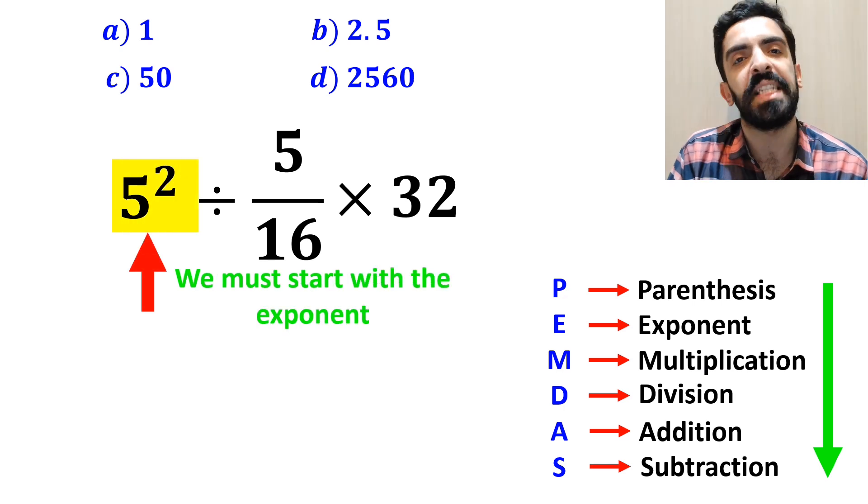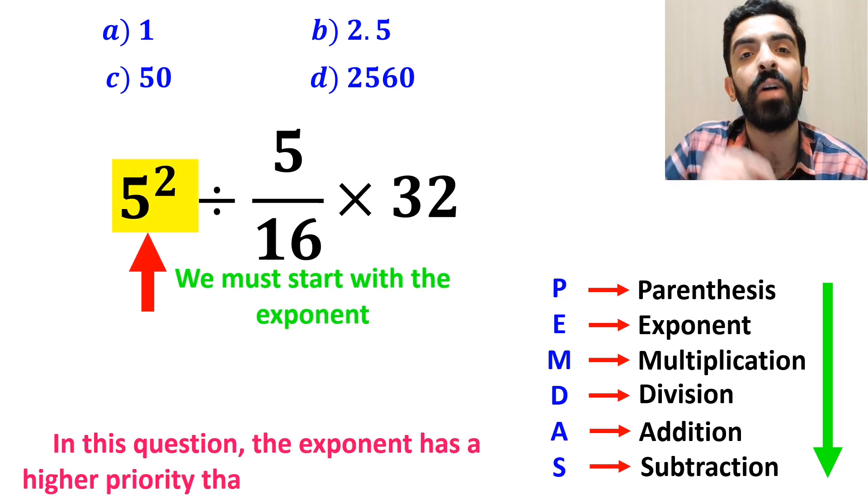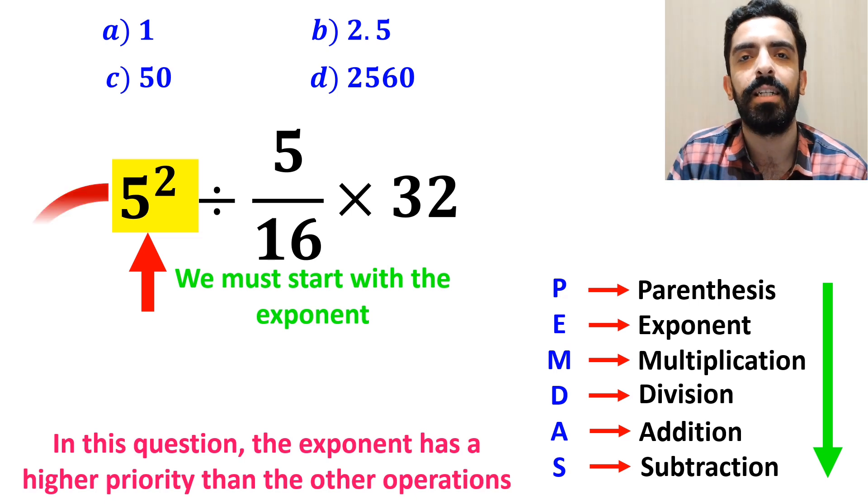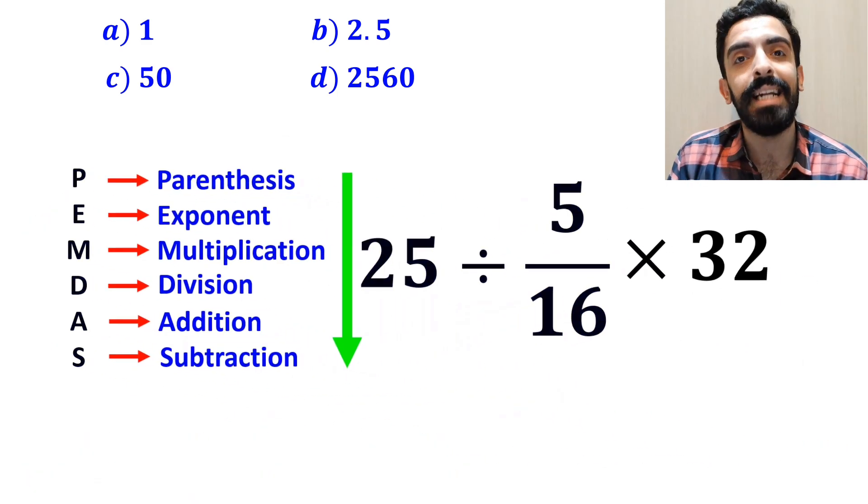First we must start with the exponent, because in this expression, exponent has a higher priority than the other operations. So, instead of this expression, we can write 25 divided by 5 over 16 multiplied by 32.